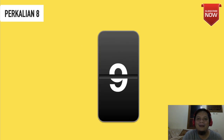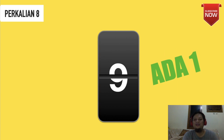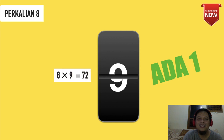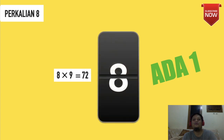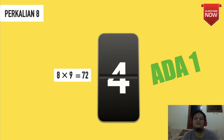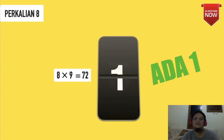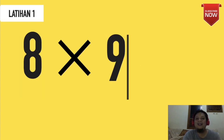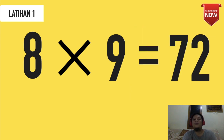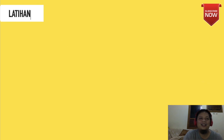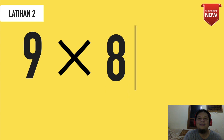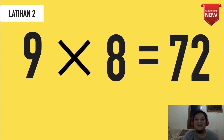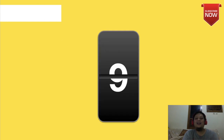Lanjut adalah perkalian 8. Ada berapa? Hanya ada 1: 8×9=72. Saya kasih waktu 10 detik untuk menghafal dan mengulang-ulangnya. Ready, start. Time's up. Latihan: 8×9 berapakah? Tepat, 72. Latihan kedua: 9×8 berapa? Tepat sekali, 72. Gampang bukan.